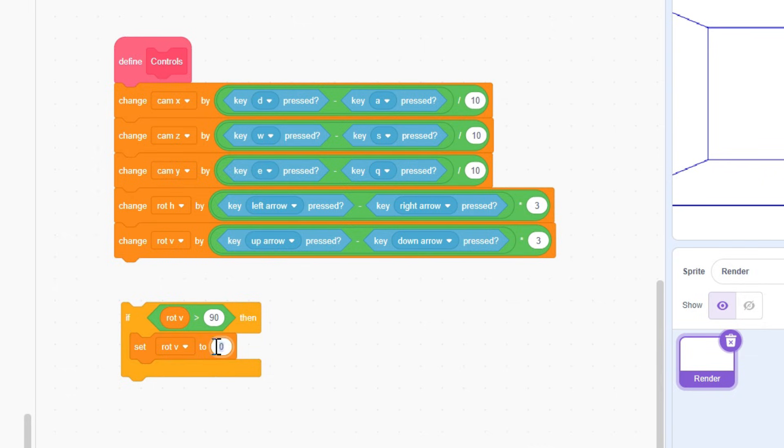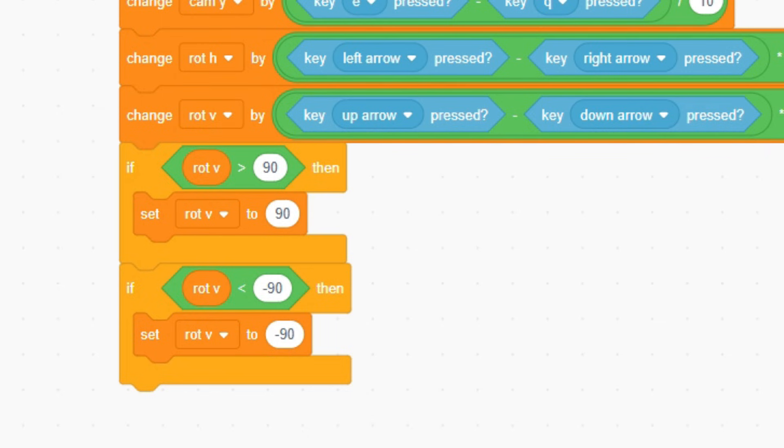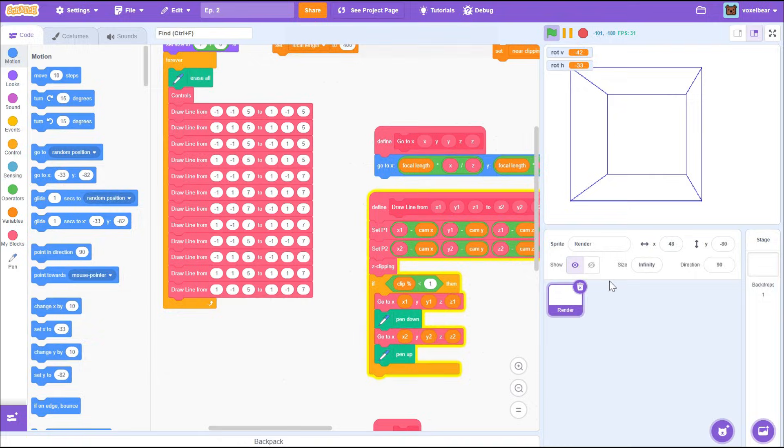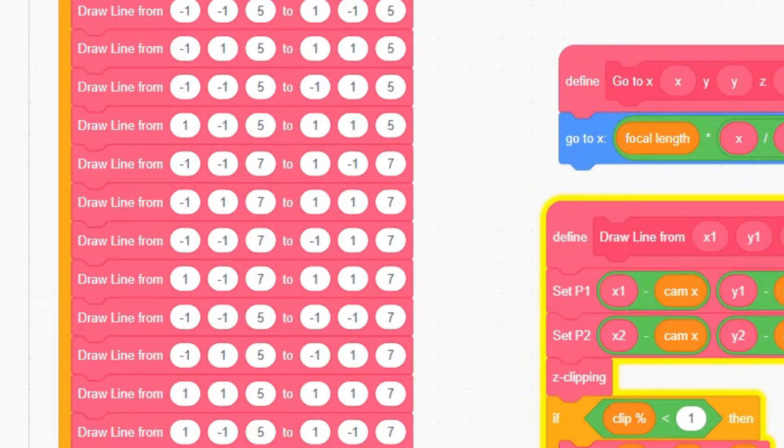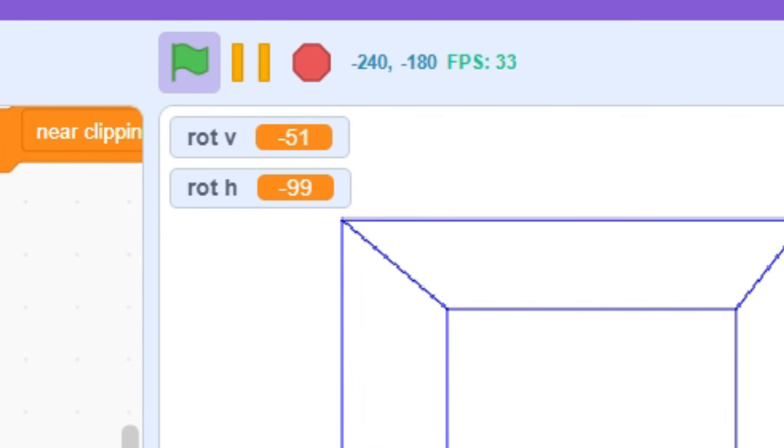You can also set boundaries for vertical rotation to prevent the camera from flipping. So for me, it's 90 and negative 90. Ultimately, our job is to take all points in space, and rotate them by these angles.